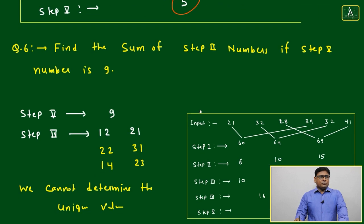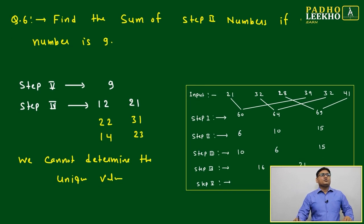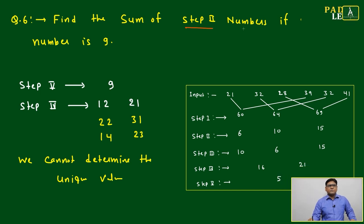Let's try to solve questions based on that. Question number 6: Find the sum of step 2 numbers if step 5 number is 9. Step 5 output is 9. Then decide the step 2 number. Step 5 is 9, then step 4. What is step 4? It is the difference between step 4 numbers to step 5.